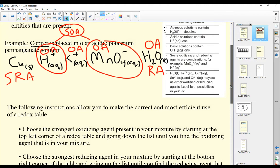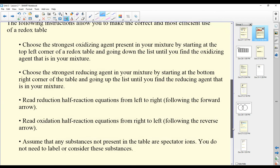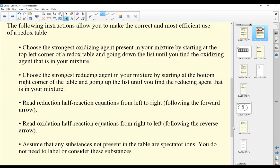I kind of skipped over this, we'll go over the steps of what I did there. The following instructions allow you to make the correct and most efficient use of a redox table. Choose the strongest oxidizing agent present in your mixture by starting at the top left corner of a redox table and going down the list until you find the oxidizing agent that is in your mixture.